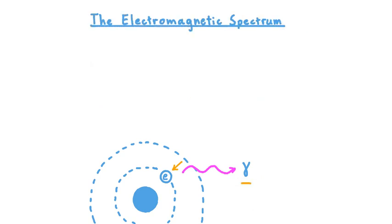Going back to this emitted photon, it's fairly common to represent a photon using a squiggly line. The reason for this is that photons have a wavelength associated with them. As it turns out, the wavelength of photons is one way we can organize the electromagnetic spectrum.